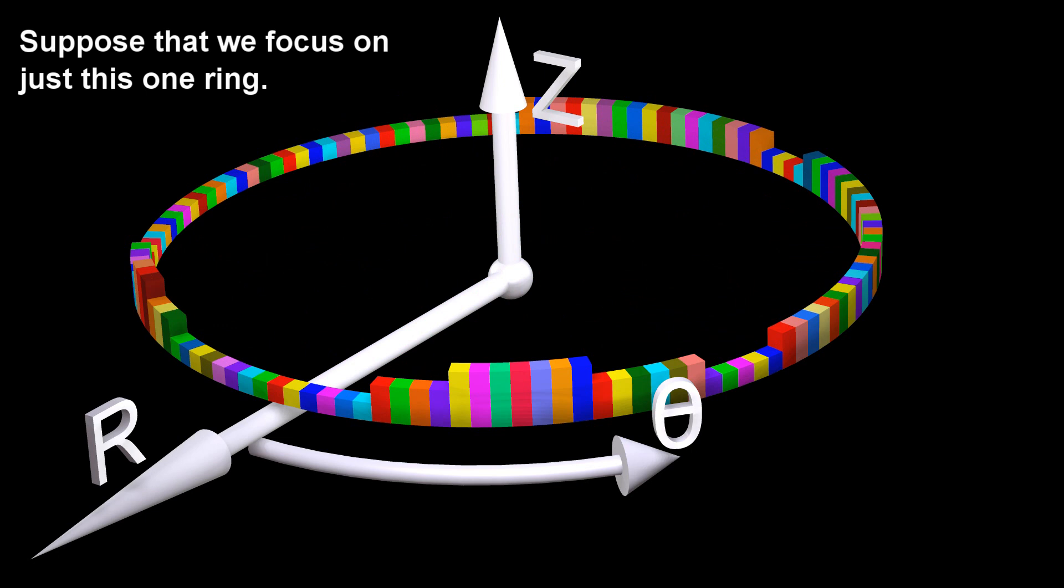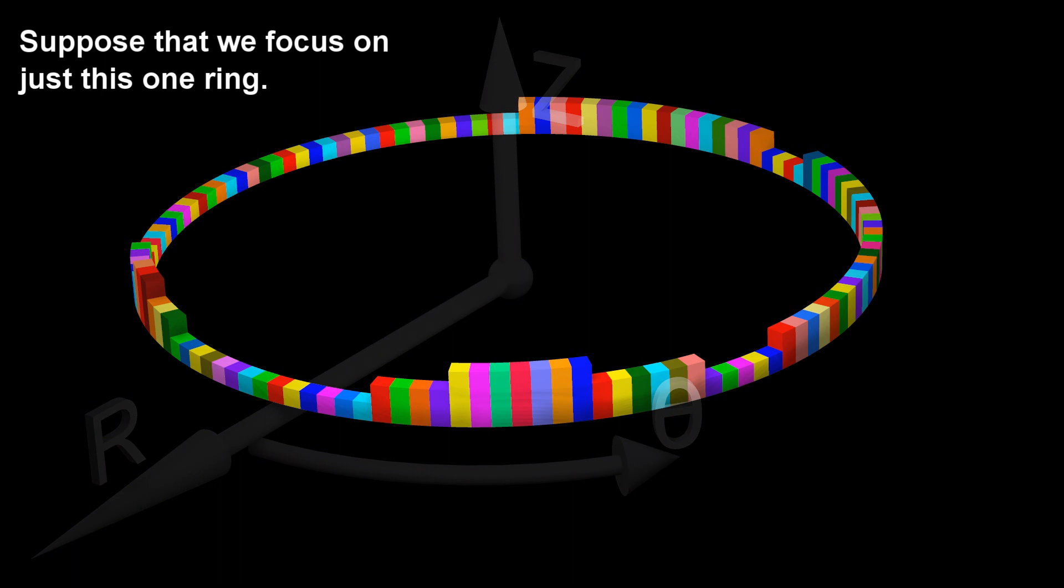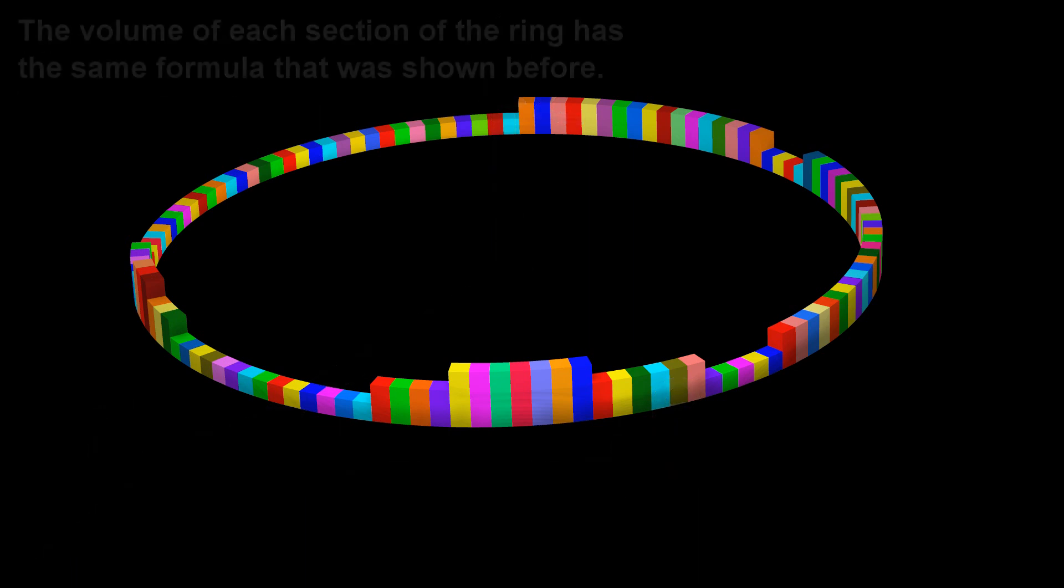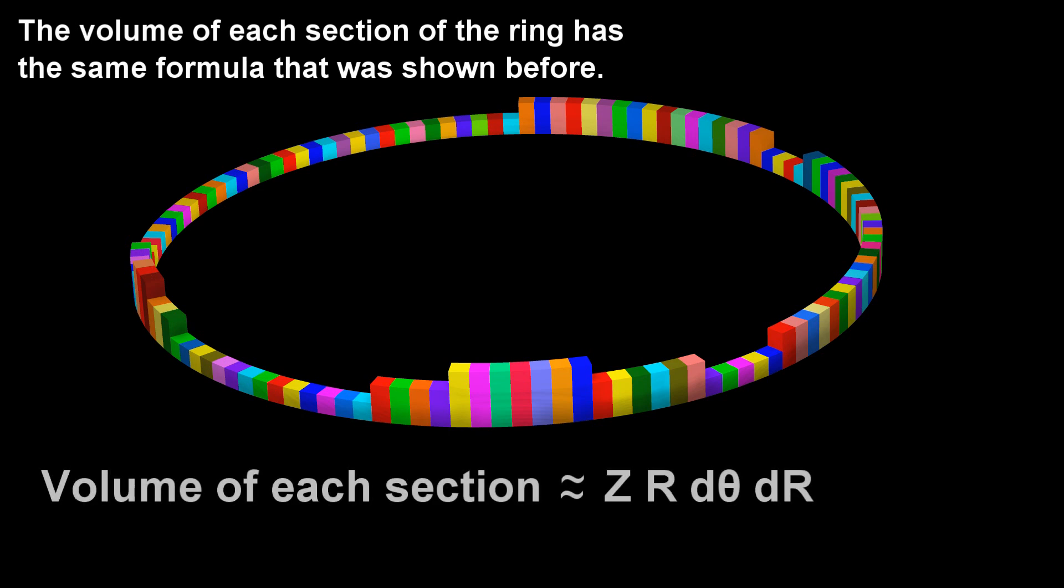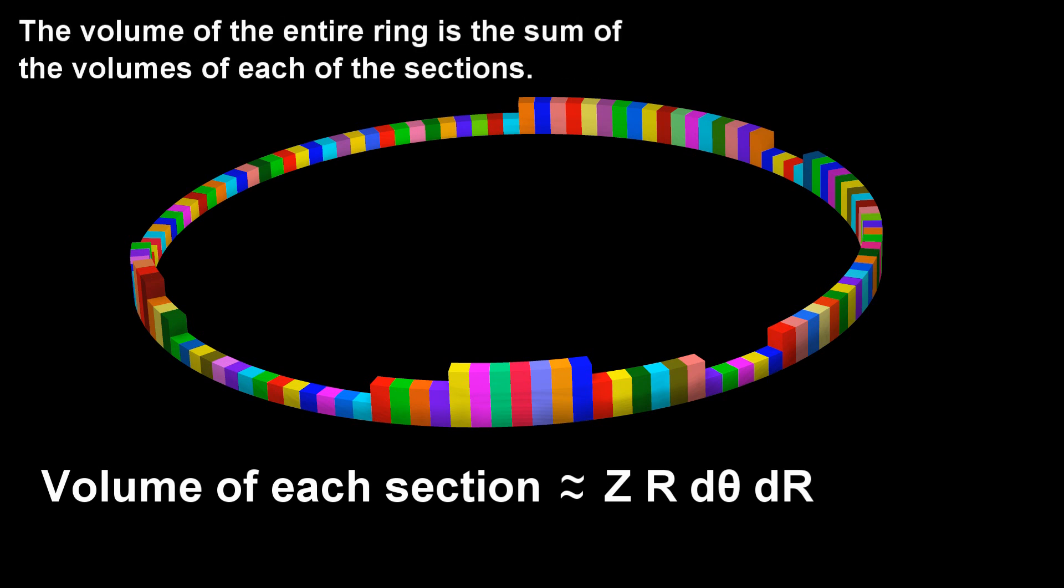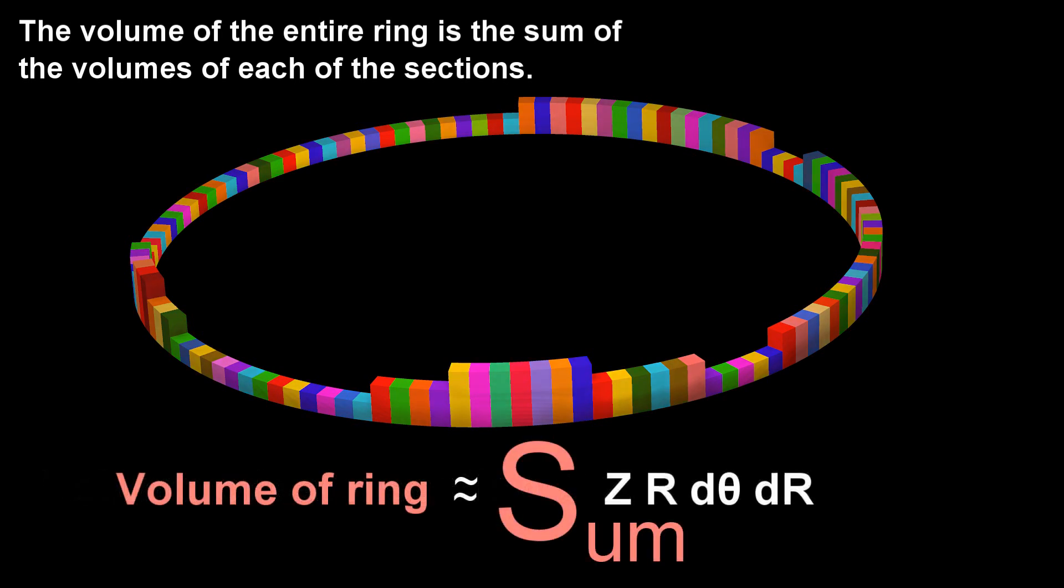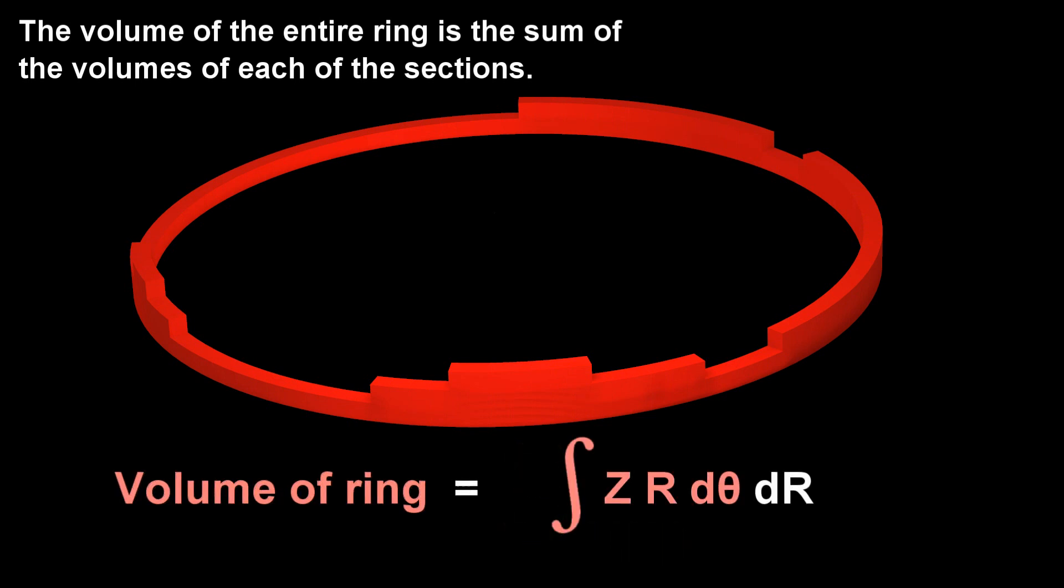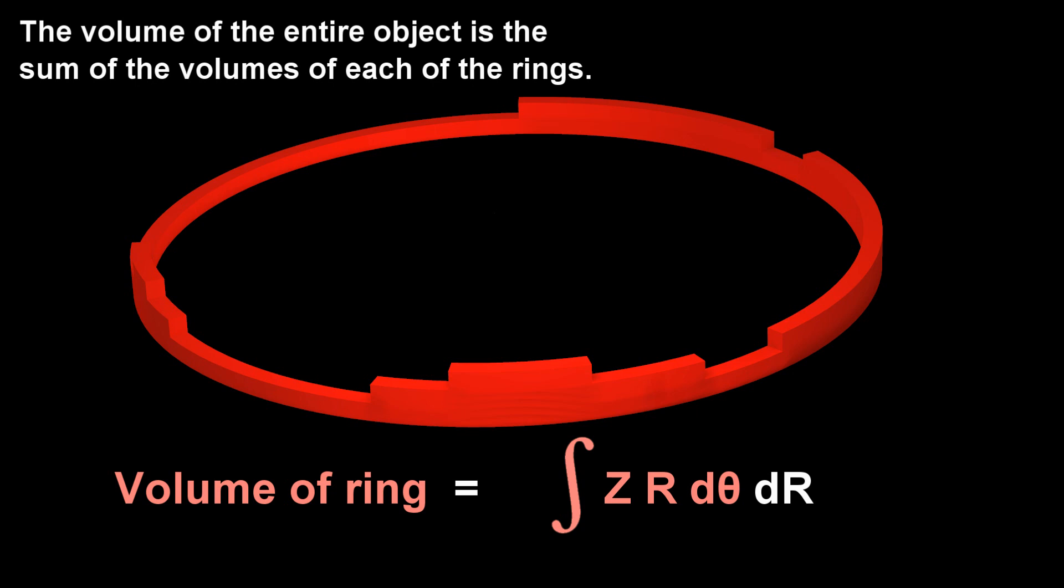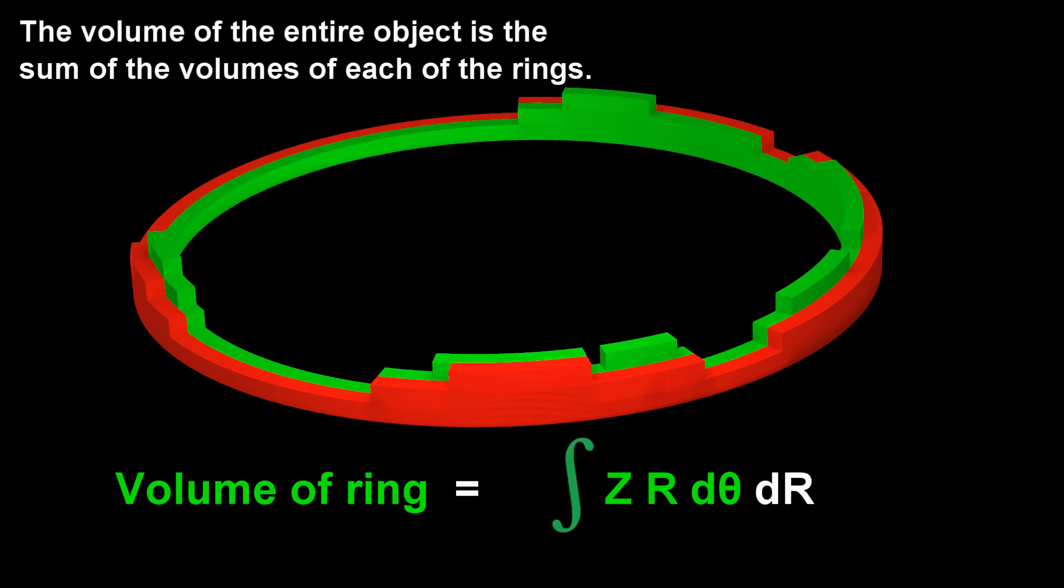Suppose that we focus on just this one ring. The volume of each section of the ring has the same formula that was shown before. The volume of the entire ring is the sum of the volumes of each of the sections. The volume of the entire object is the sum of the volumes of each of the rings.